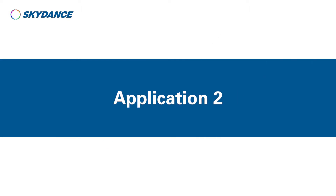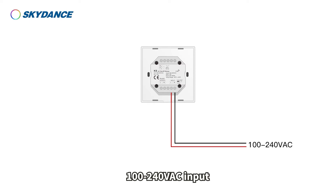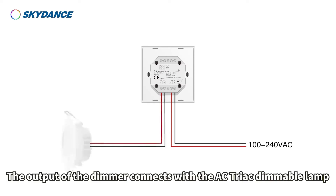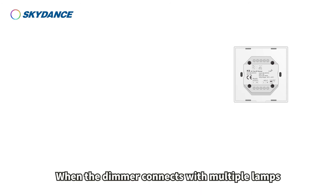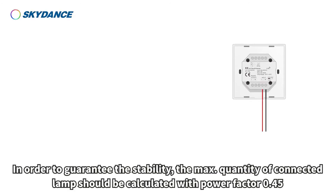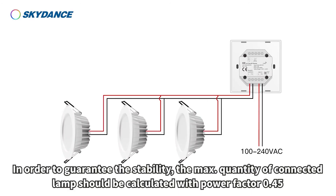Application 2: 100–240 volts AC input. The output of the dimmer connects with the AC triad dimmable lamp. When the dimmer connects with multiple lamps, in order to guarantee stability, the max quantity of connected lamps should be calculated with power factor 0.45.